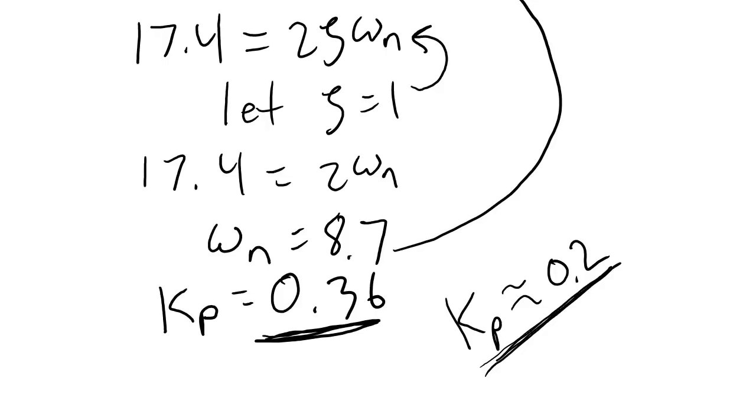For the lab submission for today, take the step response that you found for Kp equal to 1 and calculate using the method that we learned today, the Kp value that should give you a critically damped response. Then put that Kp value back into your system and look at the step response that you get. Compare the step response that you get with the calculated Kp value to your actual step response. Make some observations on how the actual behavior of the system with your calculated Kp value differs from the response that you would expect from the zeta and omega n values that you calculate analytically.